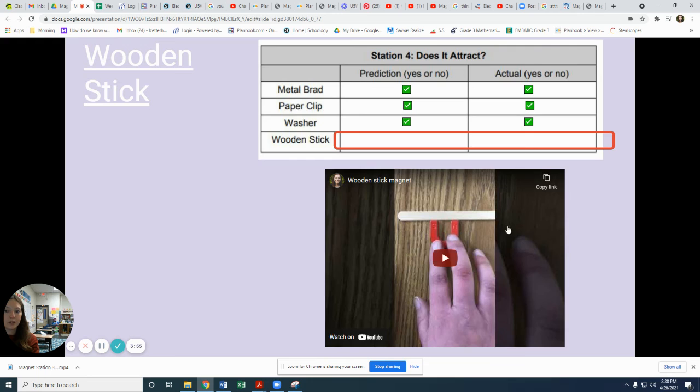Okay, final one. The wooden stick. It's just a popsicle stick. Do you think it will attract? Yes or no. Please write that in your prediction box.